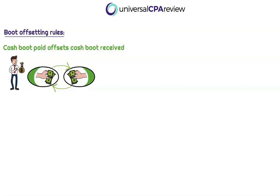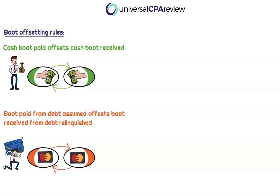But what if this is debt that is being assumed? If both taxpayers in this like-kind exchange transaction are assuming each other's respective debts associated with the property exchanged, boot paid from debt assumed will offset boot received from debt that is relinquished. If we are relinquishing our debt, that's cancellation of debt — an economic benefit. But if we're paying off somebody else's debt in this like-kind exchange transaction as well, we can offset that taxability.